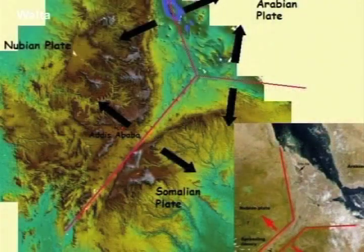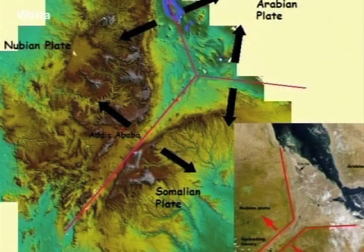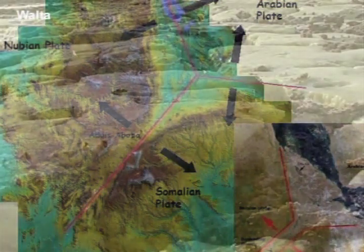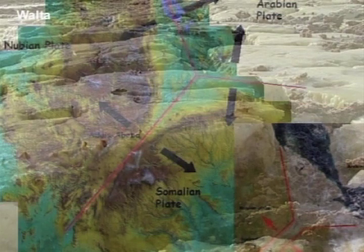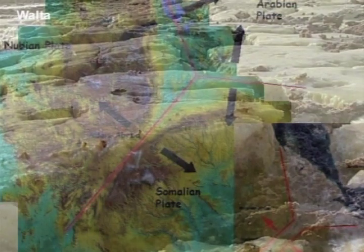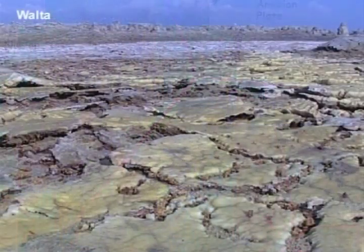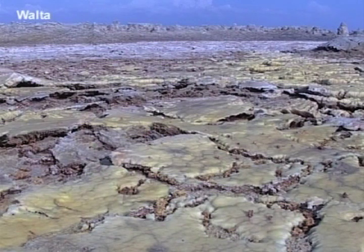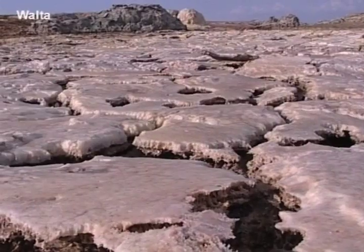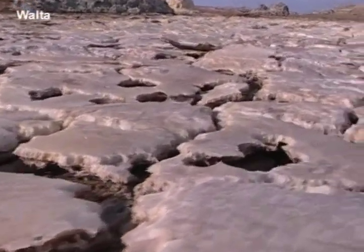The crossing of the African and Arabian plate boundaries within the Afar Triangle provides the rare opportunity to witness the transition from a continental to an oceanic crust. However, median volcanic ridges or ranges have yet to develop similar to those characterising seafloor spreading.